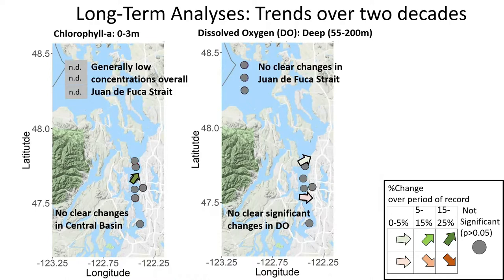For chlorophyll concentrations, the story is much less clear. There's not a clear pattern observed, apart from a single increase at one station over a 20-year record. Dissolved oxygen also did not show any clear changes. Looking over a long time record, there seem to be some small, non-significant increases in oxygen, but there's not a significant change in central Puget Sound.